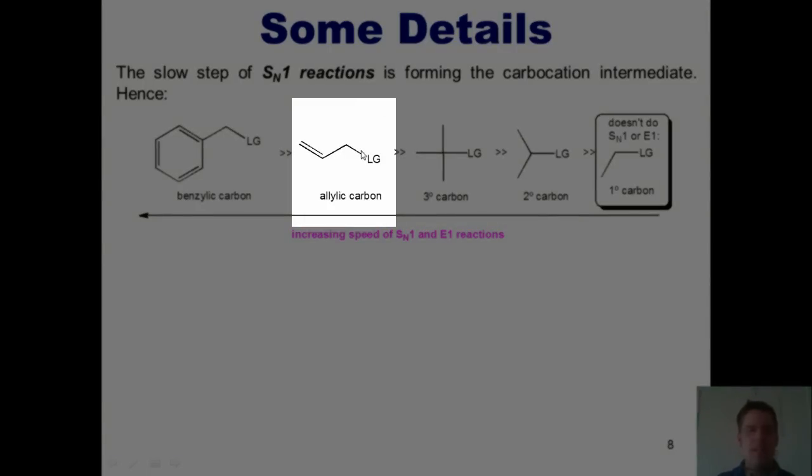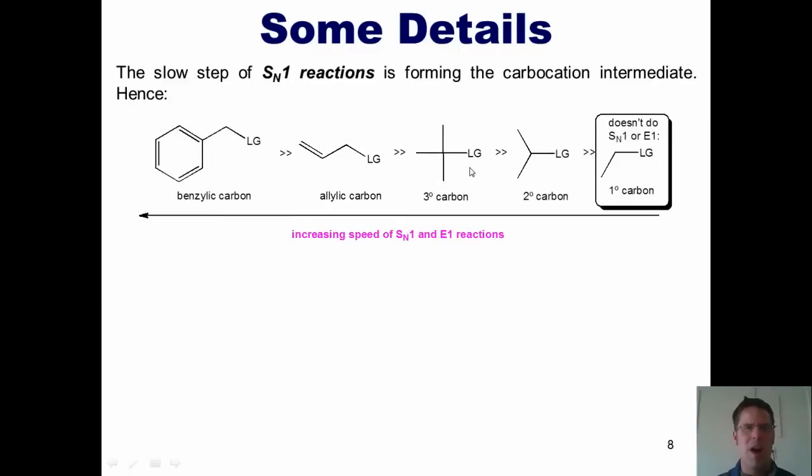Now, by comparison, a leaving group stuck to a tertiary carbon is much more favorable for an SN1 reaction, because it would leave a tertiary carbocation. Now, what about this guy over here? If I've got my leaving group attached to a carbon that's one position away from a carbon-carbon double bond, this is a leaving group stuck to an allylic carbon. That is even faster and more stable than a tertiary carbon. Why? Because that positive charge will actually be shared by this carbon, as well as the carbon over here due to resonance. That is not a primary carbocation. It is a primary allylic carbocation, which is even more stable than a tertiary carbocation.